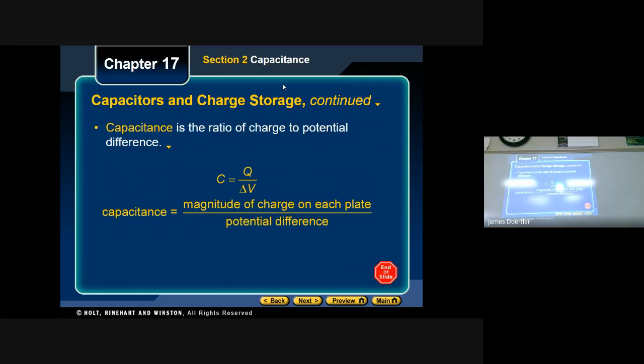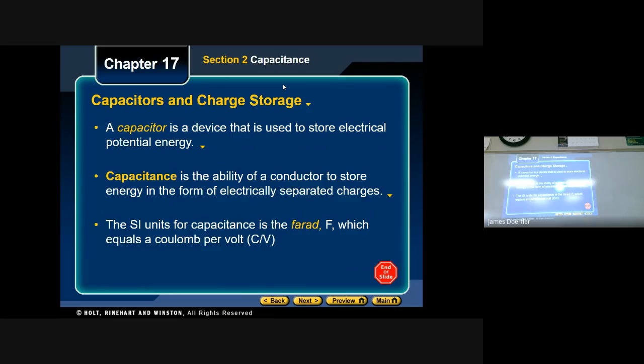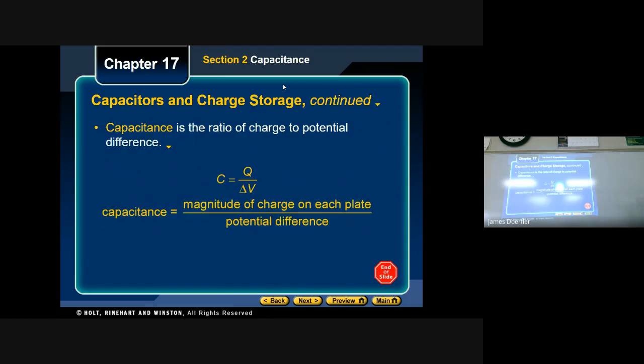And so we can calculate capacitance by this, taking the magnitude of charge on a plate. So again inside these capacitors we've got these separated plates and separated charges. So we take these magnitudes of charge on each plate and divide it by the potential difference. So the basically the voltage that's going through them. So there's your first formula you need to write down on your formula sheet.